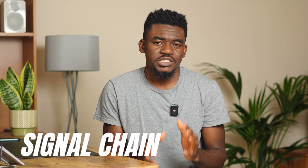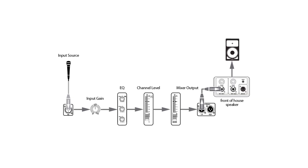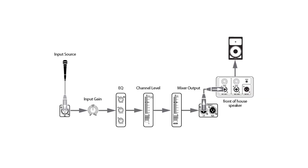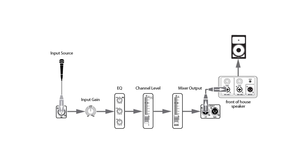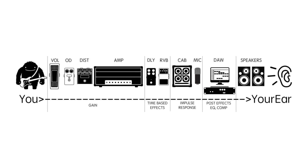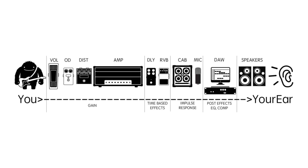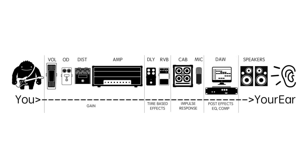Let's talk about the signal chain. This refers to the path that the audio signal takes from the source — say a microphone — all the way through to the speakers. Each part of the signal chain, like the preamp, the compressor, the EQ, and effects you use, all shape and affect the final sound. Understanding and controlling your signal chain is crucial for creating a clear, professional-sounding mix.